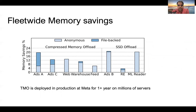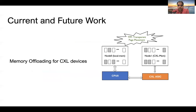Let me talk about fleet-wide memory results. TMO has been deployed in production at Meta for more than a year on millions of servers. Across a breadth of workloads and services in our fleet, memory savings range anywhere from 5 to 20-plus percent, with both offloading backends being pretty effective. Our journey is not done — there are more disruptive technologies coming, such as CXL or Compute Express Link, a load-store bus to attach different memory media to CPU servers. We are working on extending our TMO technique to do transparent page placement, which is much more dynamic and doesn't use the swap backend.